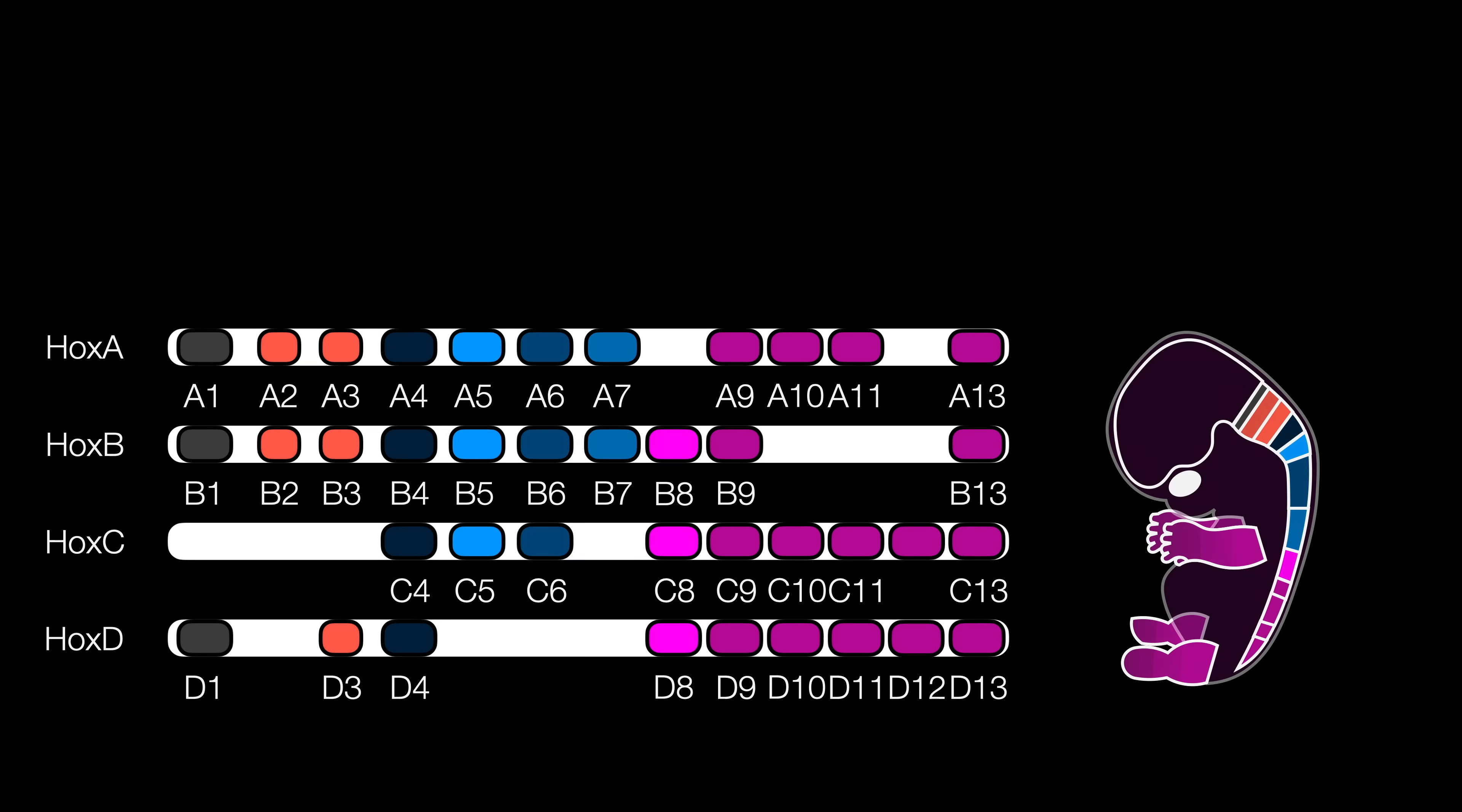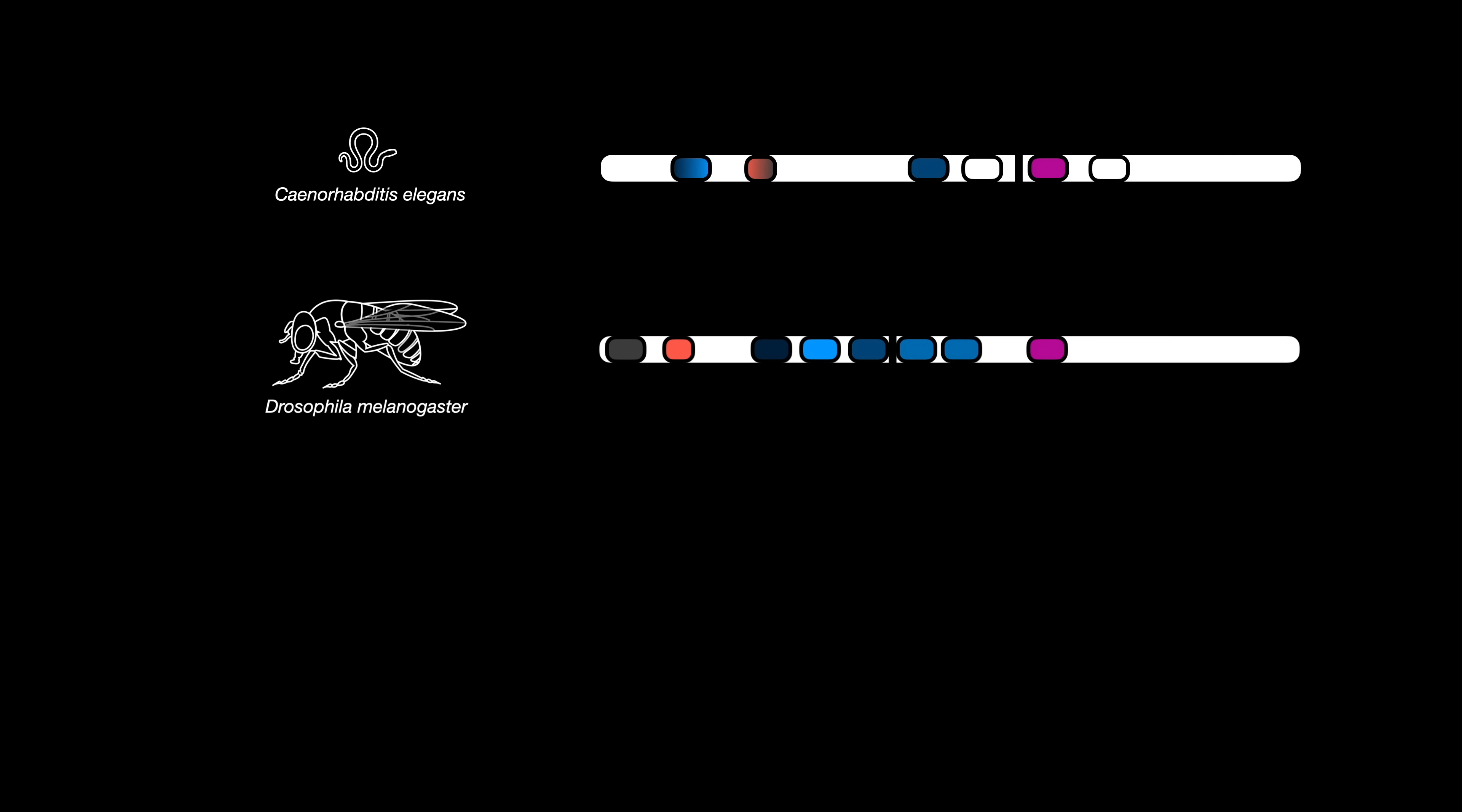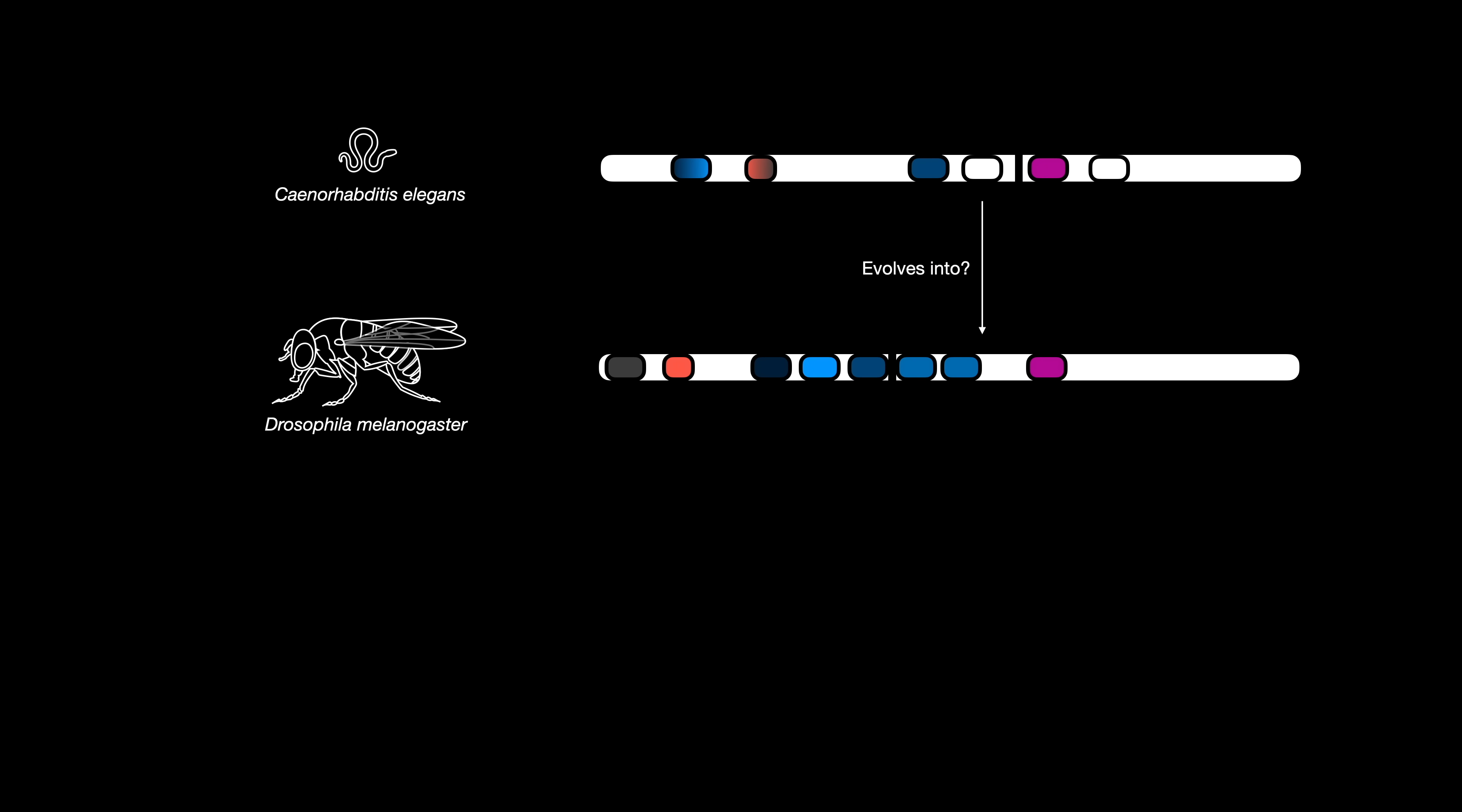So where do the various forms of Hox genes come from? Well, let's start with the simplest form, from C. elegans. You can see that between it and Drosophila fruit flies, there are a few duplication events. These duplications are even more rampant a few more species down the line. But these species are both extant, meaning they're both alive. So why do they look like they've evolved from each other?